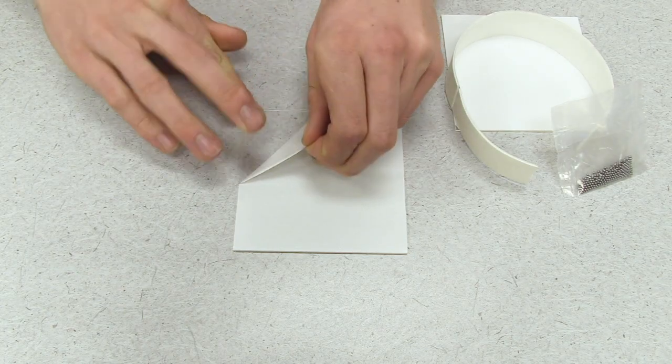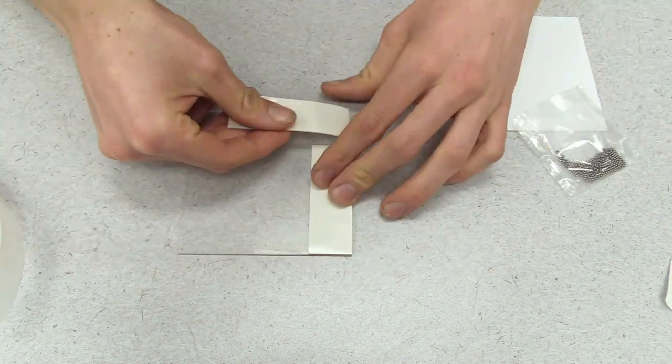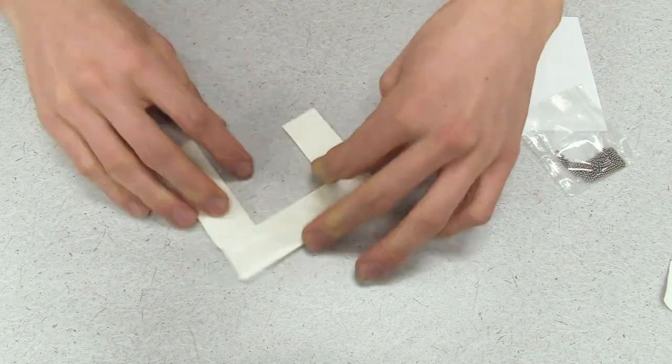First, pull off the protective film on the top of your acrylic sheet. Take four pieces of double-sided tape and put one piece on each of the edges of the acrylic sheet.